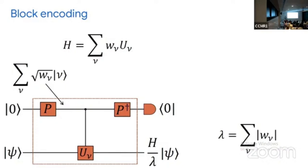An important feature is this divide by lambda, where lambda is a sum of absolute values of weights. This governs the complexity of the overall simulation. Whether you're estimating eigenvalues or doing time-dependent evolution, the complexity is proportional to lambda, so it's important to make it as small as possible.